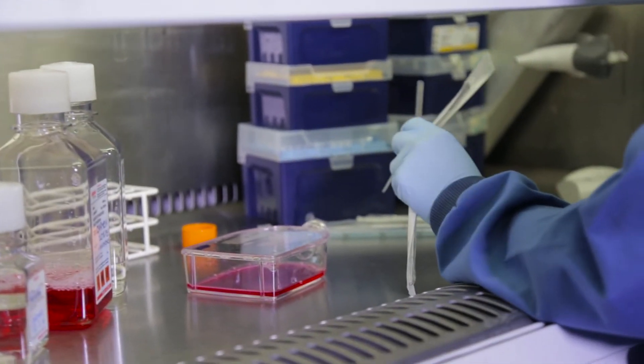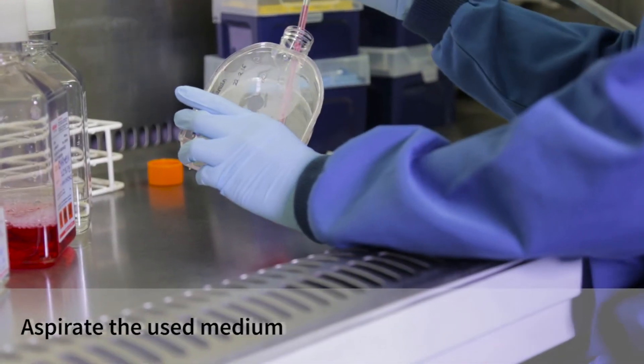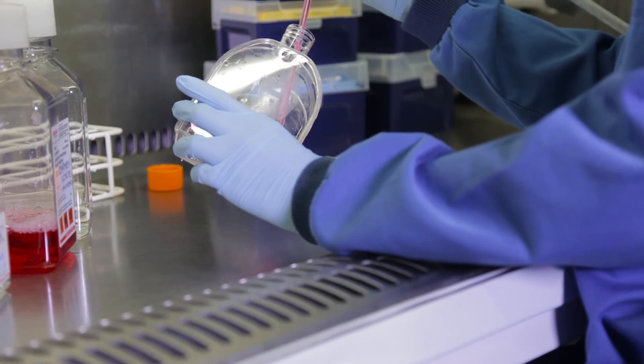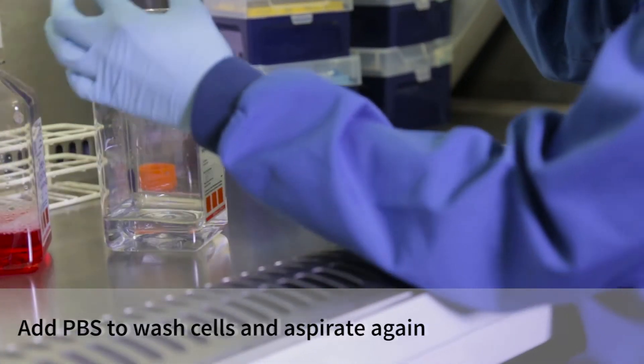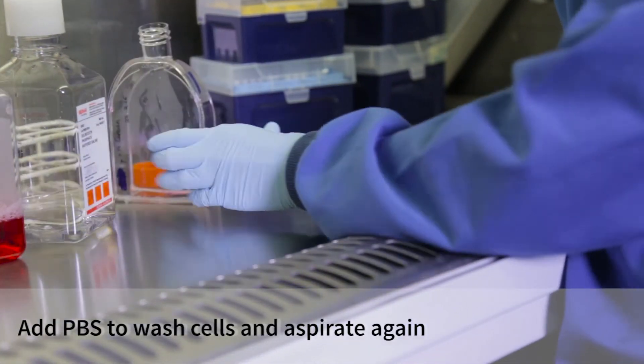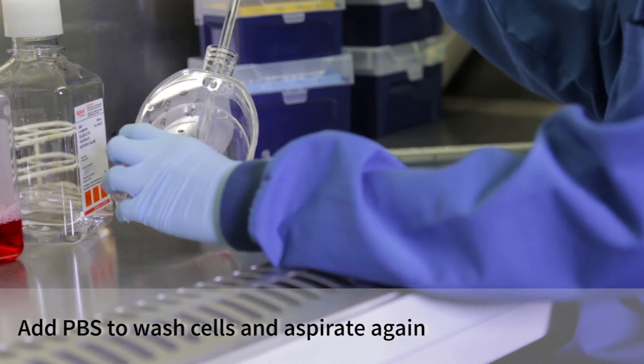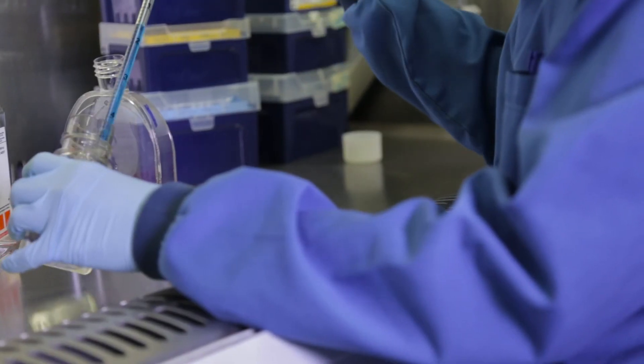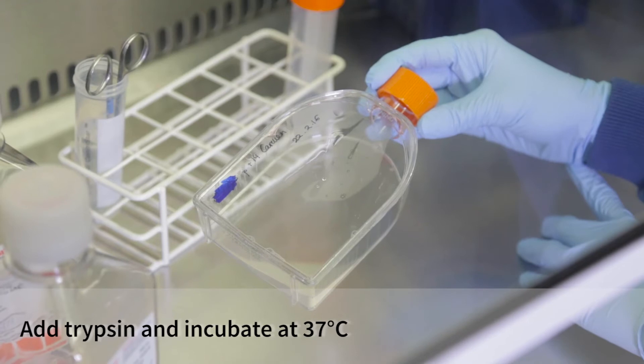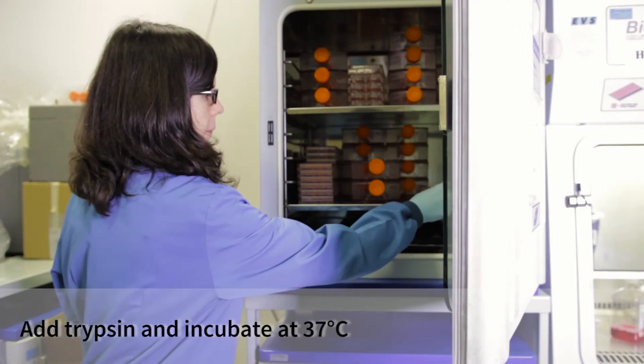Now, I would like to show you how to collect cells from the flask. These cells are adherent. That means they grow attached to the surface of the flask and I will have to detach them. The first step is to aspirate the used medium. After that, I add PBS buffer to wash the cells, which are attached to the bottom of the flask, and aspirate again. Finally, I add the trypsin and incubate at 37 degrees for 5 to 10 minutes.